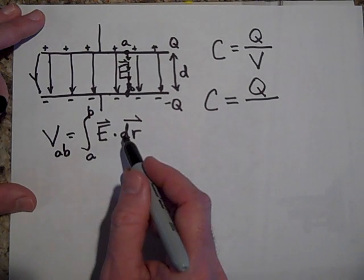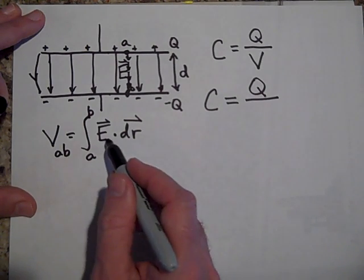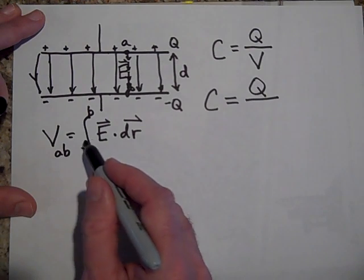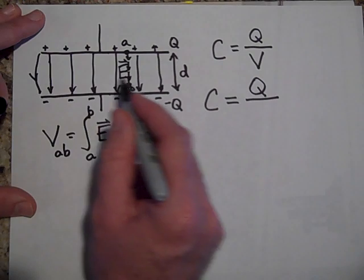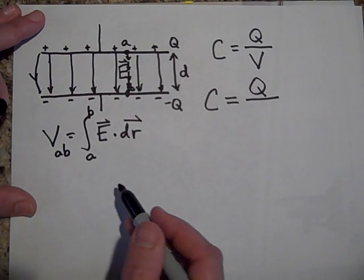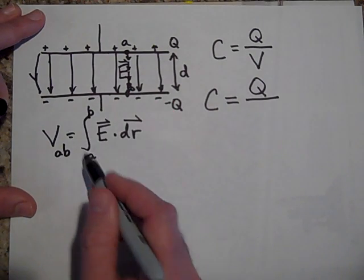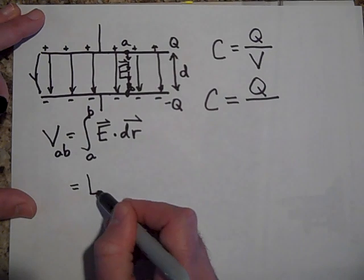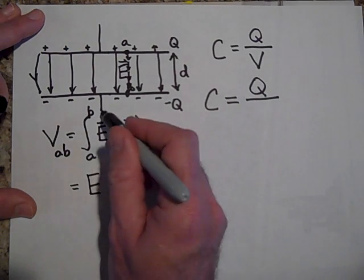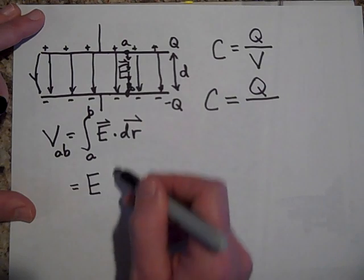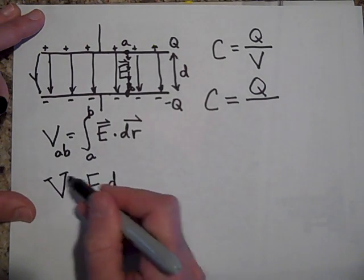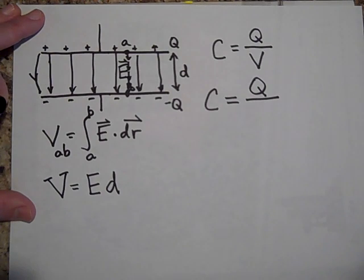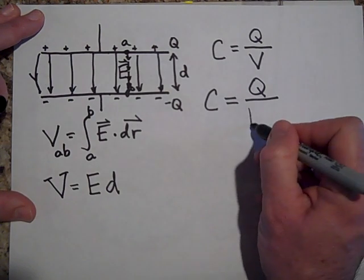And then when you do that, because E and dr are in the same direction, you can pull the E out of the integral because it's the same at every location. See how the lines aren't getting closer or further apart from each other? So pull that out and when you do that you get just E. And the integral is telling you to sum up all the dr's, so that's going to be d. So remember the voltage across parallel plates is Ed.